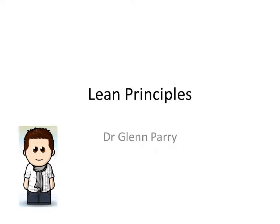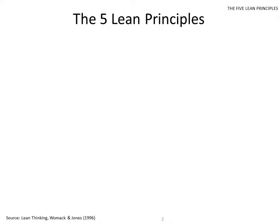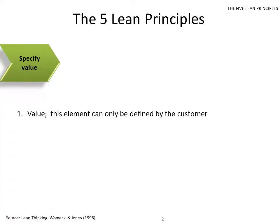In this presentation I'm going to talk you through the lean principles. There are five lean principles. The first one is specify value. Value can only be defined by the customer, so if you're going to measure that you're going to have to talk or survey or somehow capture customer data.